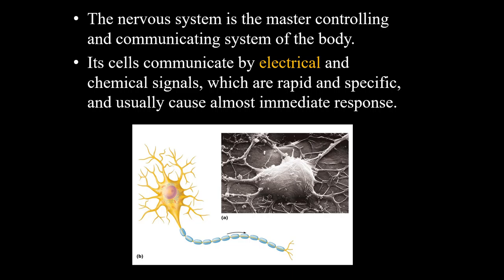The principal cells that carry out the function of the nervous system are the neurons. This picture shows what's known as a multipolar neuron. It's multipolar because it has numerous dendrites, which are the receiving parts of the neuron. It has a cell body that contains most of the organelles from Chapter 3 - a nucleus and nucleolus, mitochondria, and rough ER. It has one axon that takes the impulse away from the cell body.